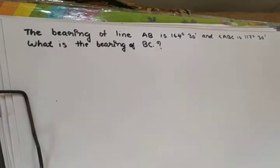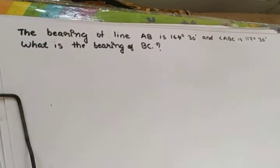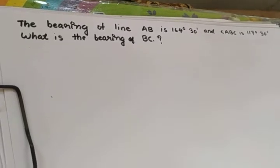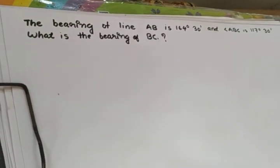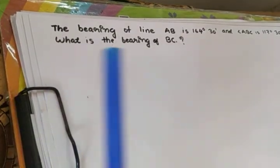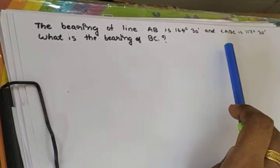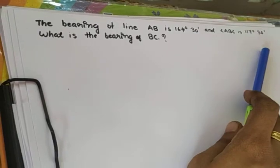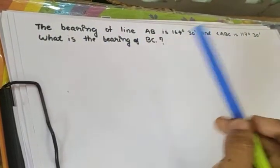We've done two bearings at the end of the line. The bearing of line AB is 164 degrees 30 minutes, and the angle ABC is 117 degrees 30 minutes. What is the bearing of BC?